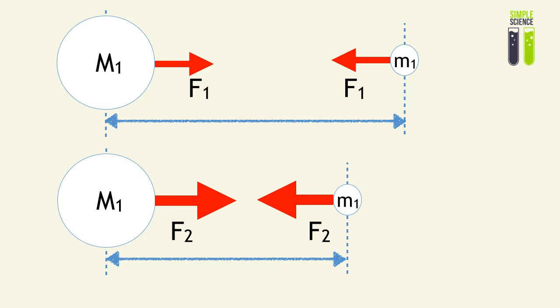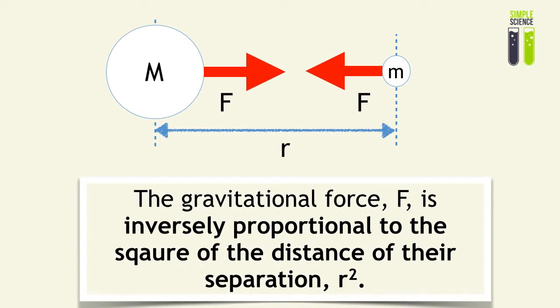That is quite obvious if you're looking at every other force — talking about electrostatic, it is the same. What he then found out was that the gravitational force is actually inversely proportional to the square of the distance of their separation. As you take these things closer together, r decreases, and as r decreases, inversely proportional gives a greater gravitational force.